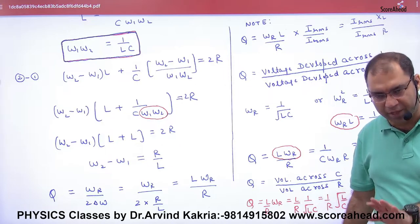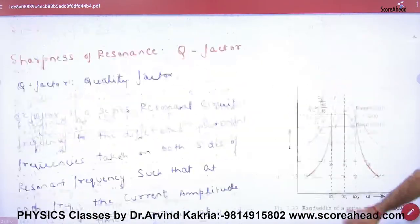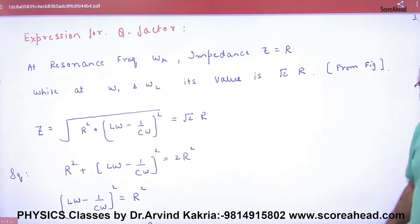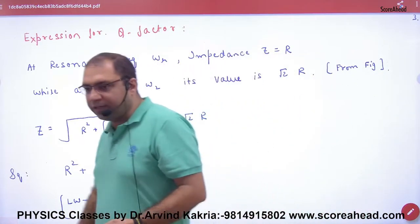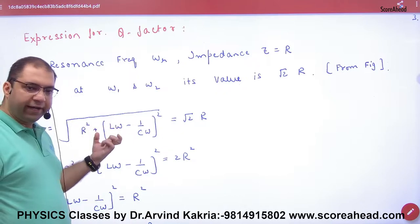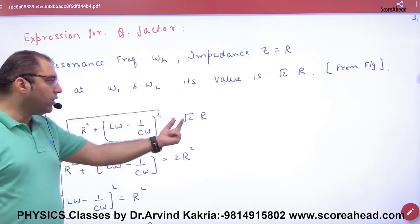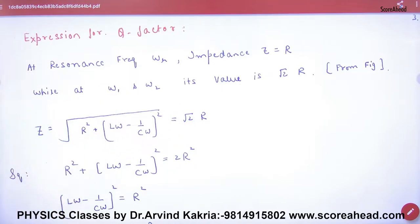In actual, that definition - in actual here, impedance at resonance will be equal to R. So what is Z? Under root of R square plus XL minus XC, which will be equal to R. Not R but root 2 R - why did we do root 2 R? We have done this.